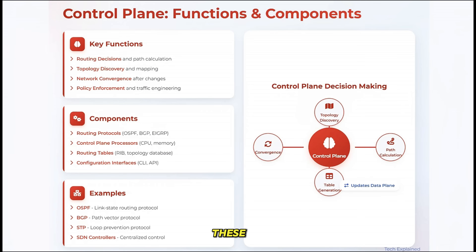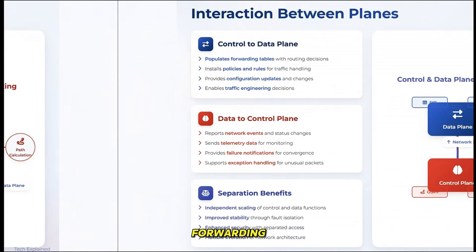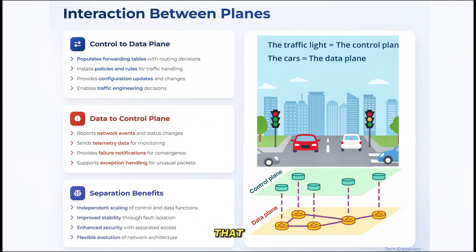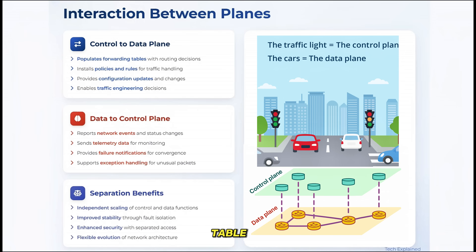So how do these two planes work together? It's a fascinating relationship that's crucial to network operation. The control plane populates the forwarding tables that the data plane uses. When the control plane determines the best path to a destination, it installs this information in the forwarding table. The data plane then simply looks up these pre-computed paths when forwarding packets.